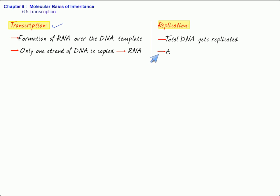Also, in the case of replication, you had adenine pairing with thymine, whereas in the case of transcription, you will have adenine pairing with uracil because we are forming RNA over the DNA template.